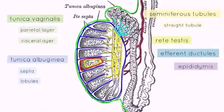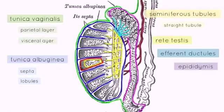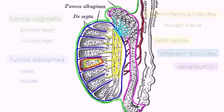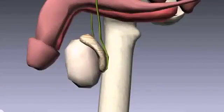Posteriorly on the testes, you've got the epididymis, outlined here in purple. Sperm cells are secreted from the lining of the seminiferous tubules and then travel via this duct system to be stored in the epididymis — it is in this location where they are stored until ejaculation. Coming back to the 3D model, you can see the epididymis sitting on the posterior and superior aspect of the testes.